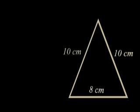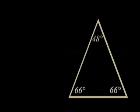This is an isosceles triangle, with two sides equal. The base is 8 centimeters long, and the sides are 10 centimeters long. The base angles are 66 degrees, and the angle at the top vertex is 48 degrees.